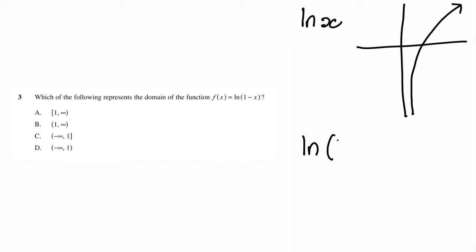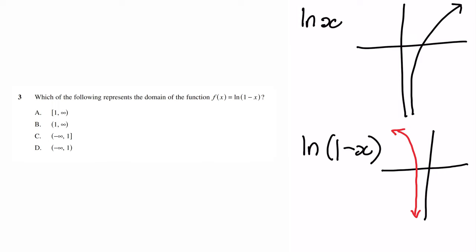Putting a negative x into ln(x) flips the graph horizontally, and adding 1 shifts it to the right, so the graph now has an asymptote at x equals 1. The domain — the values of x for which this function exists — is from negative infinity up to but not including 1. Therefore our answer is D.